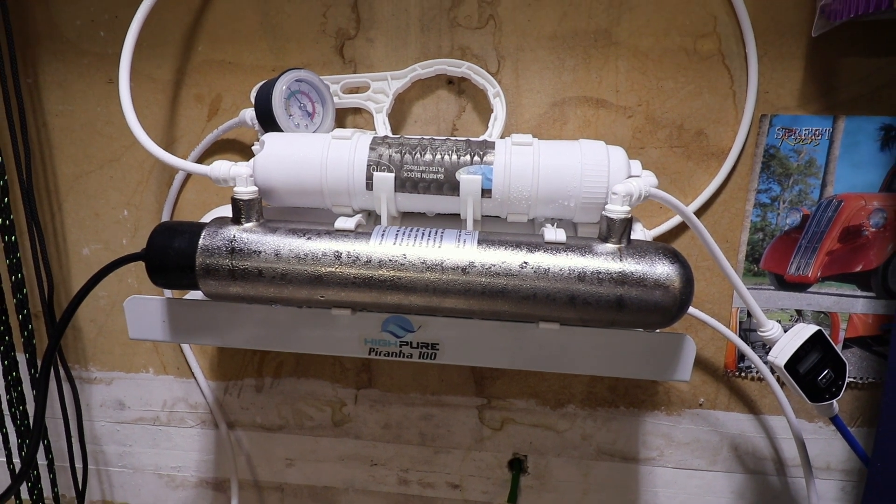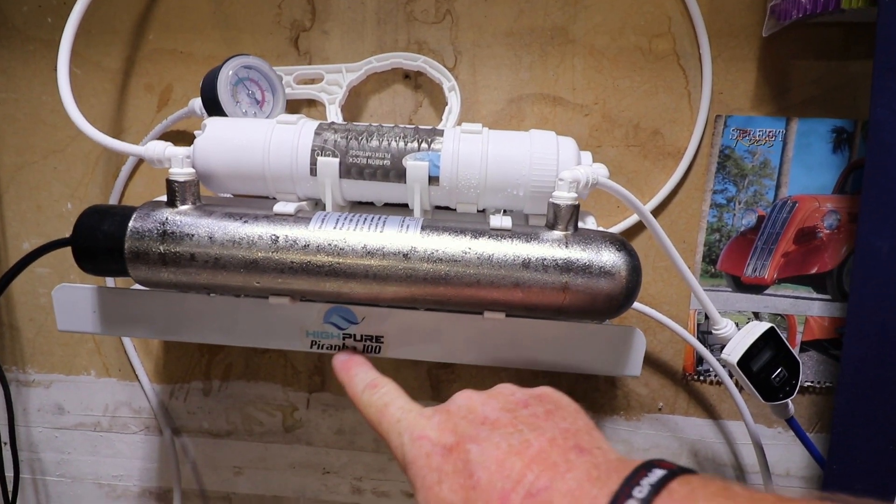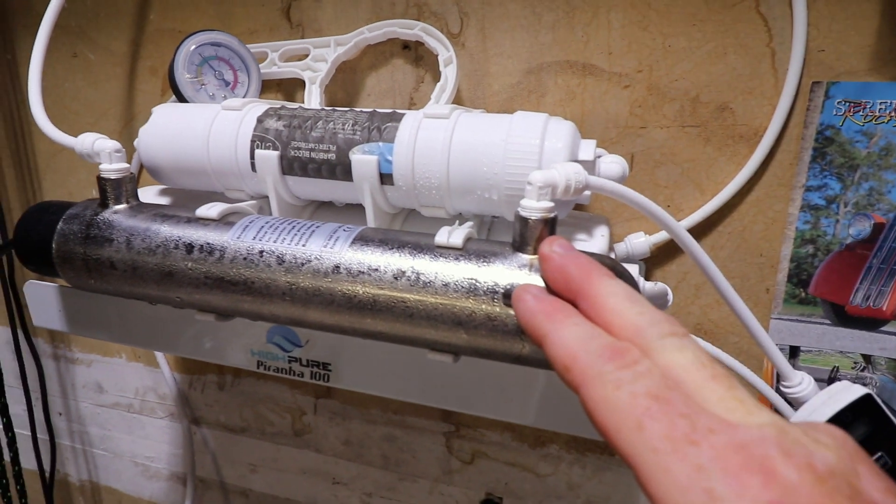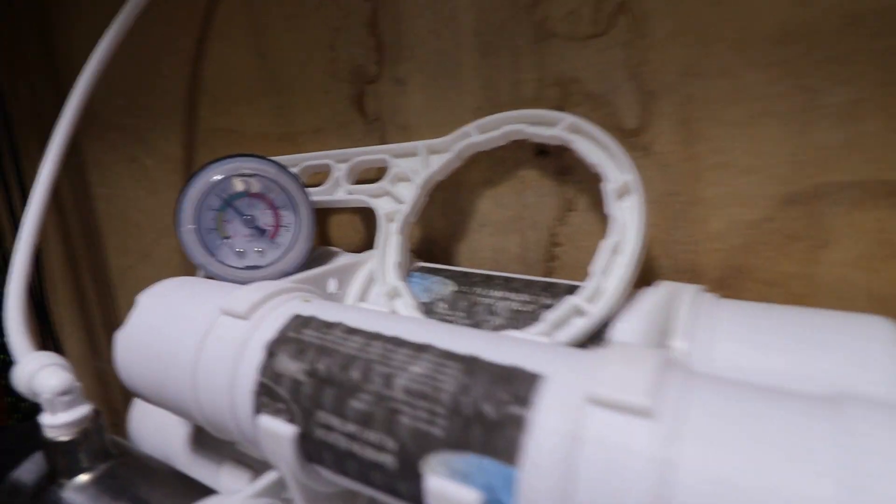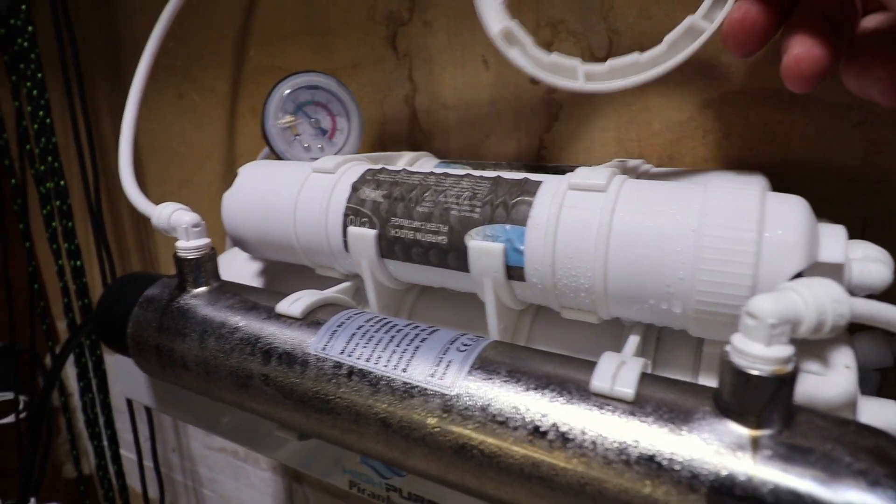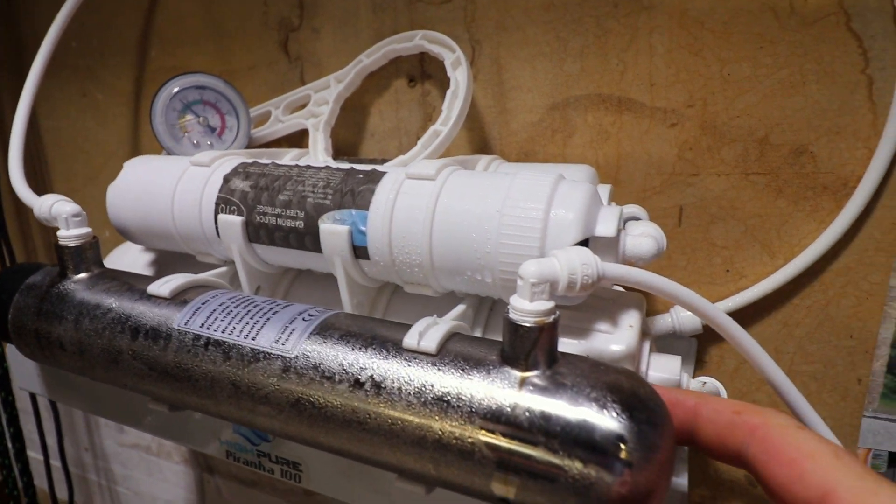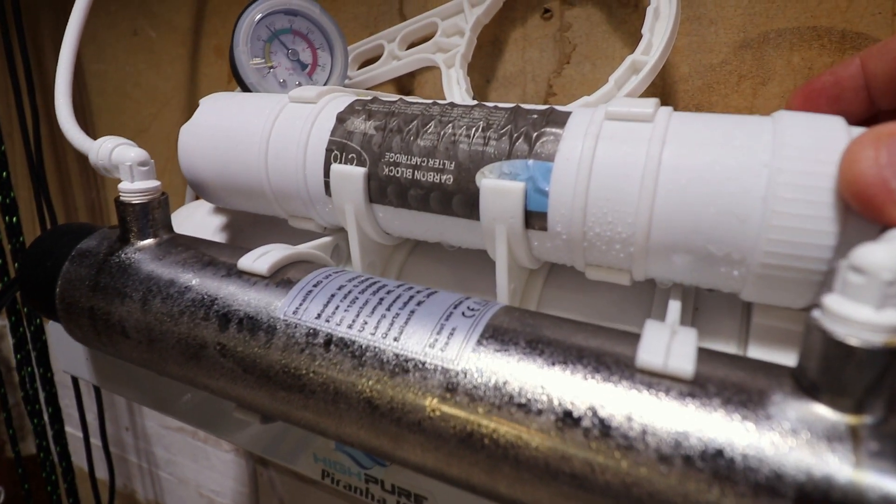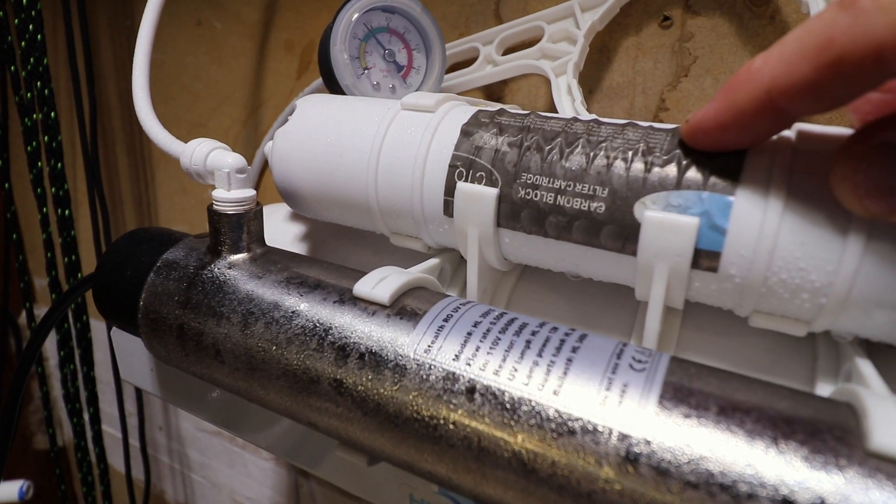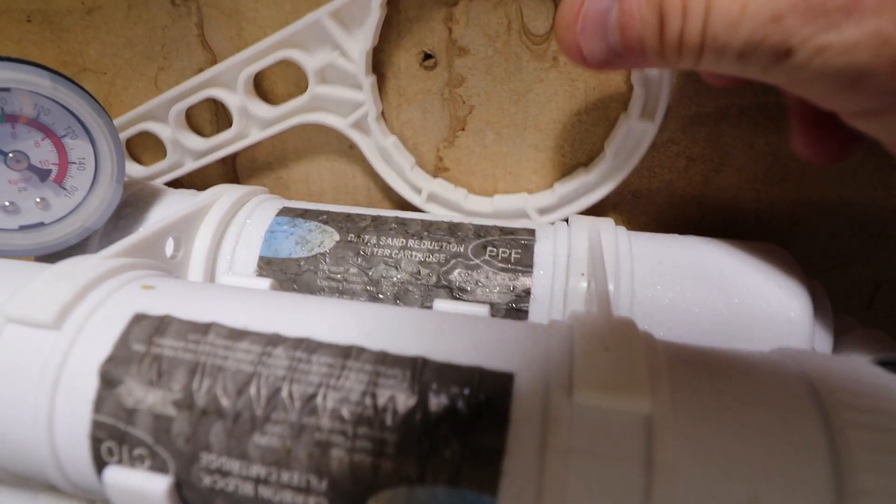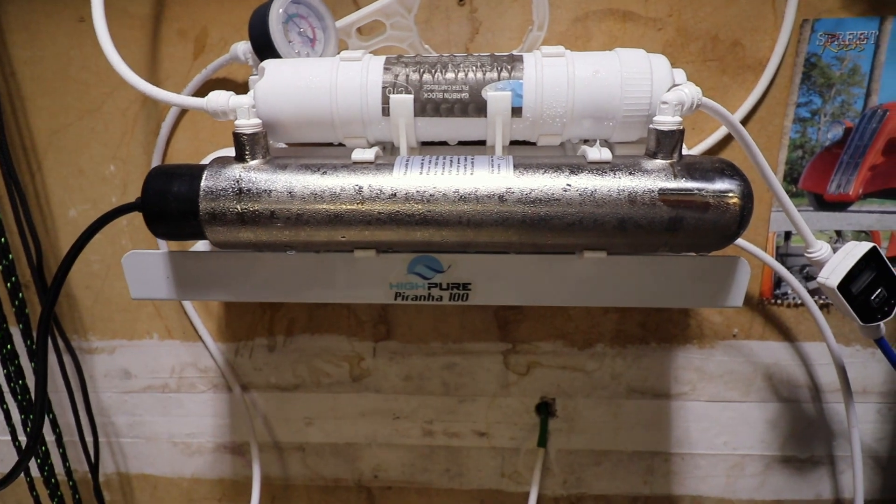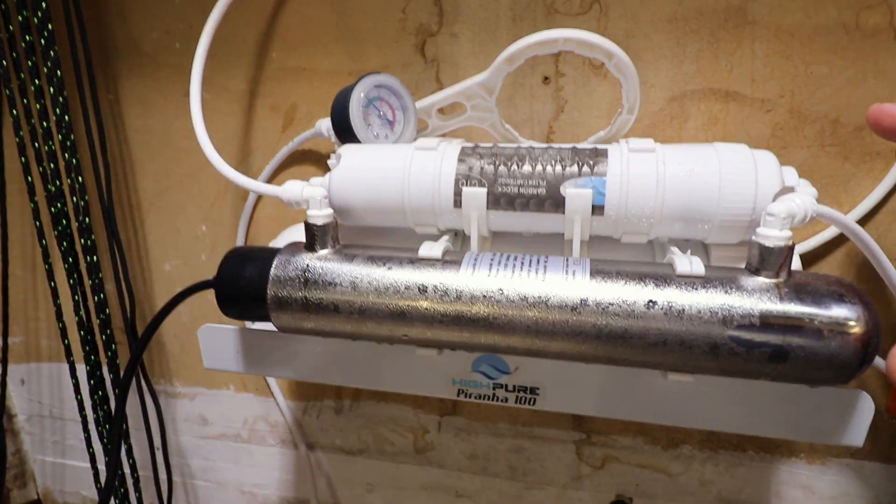Here we go, this is my RO system from HyPure, it is the Piranha 100. This is actually an add-on to the system, we'll talk about it in a minute. But this is a three-stage system right here and there's the pressure gauge, comes with the little tool to help you change out the filters. You can also use this tool to change out the bladder. Right here is the two filters before the RO bladder and this is the carbon filter and this is the dirt and sand filter right here.